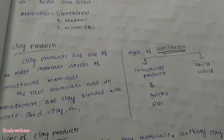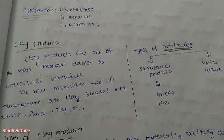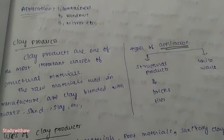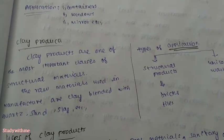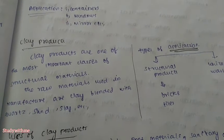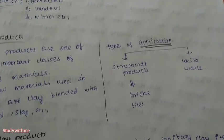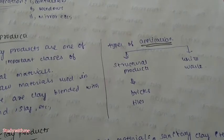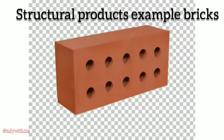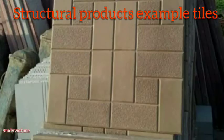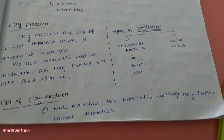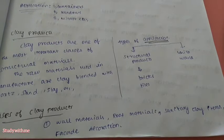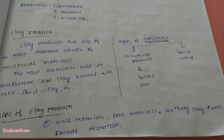Clay products are one of the most important classes of structural materials. Clay is blended with quartz, sand, and feldspar. Applications include structural products like bricks and tiles. Uses include wall materials, roof materials, sanitary clay items, figures, and decoration.